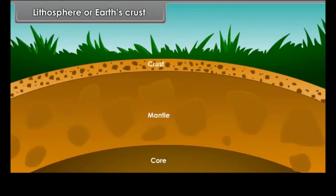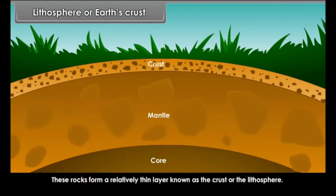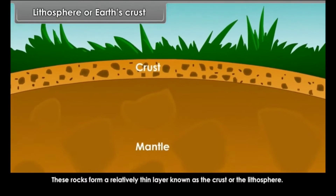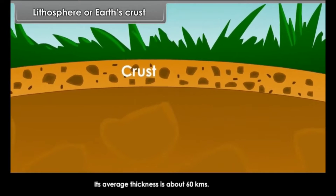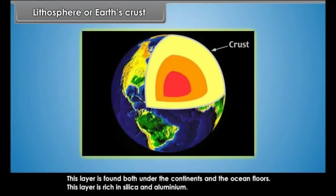Lithosphere or Earth's Crust. The surface of the Earth consists of rocks of various types. These rocks form a relatively thin layer known as the crust or the lithosphere. Its average thickness is about 60 kilometers. This layer is found both under the continents and the ocean floors.